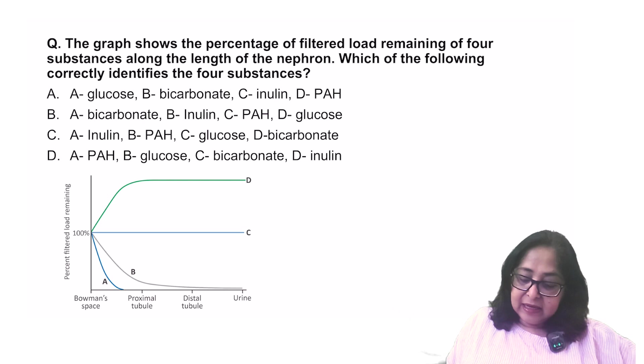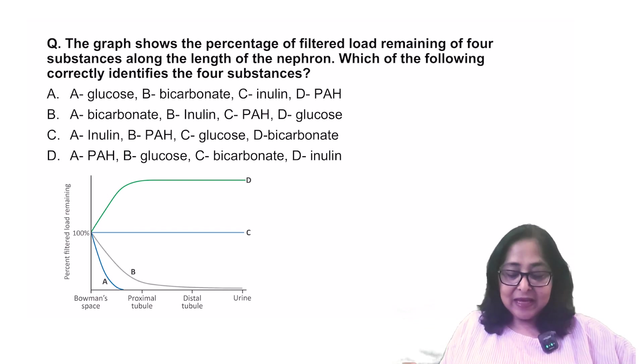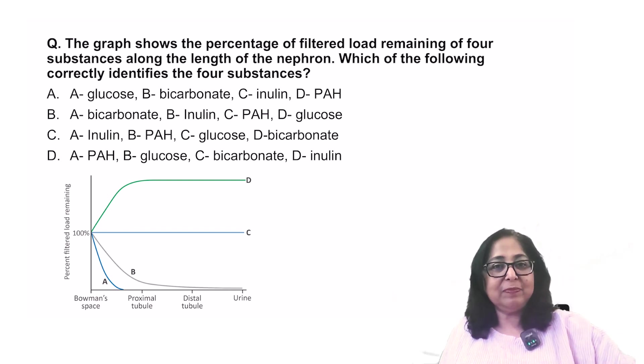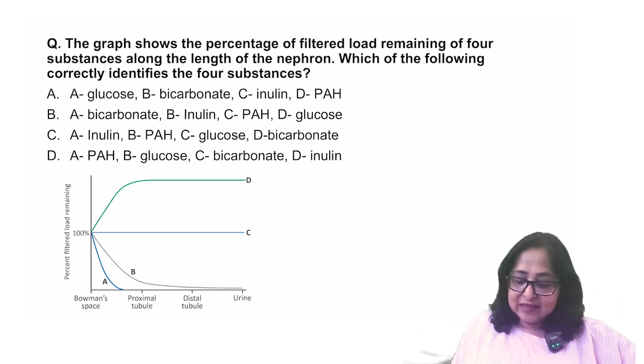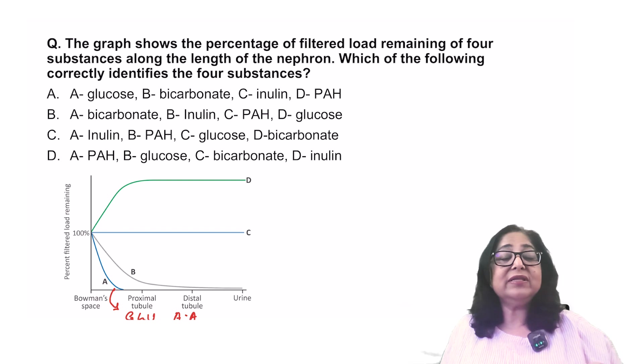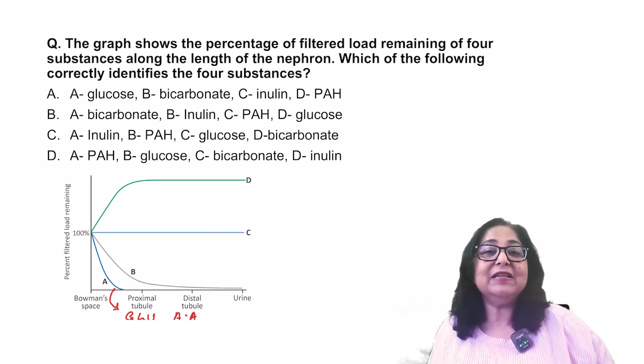Now, look at substance A. It is freely filtered. That means in the glomerular filtrate 100%. But then by the time it reaches the end of the PCT, zero remains in the tubular fluid. All of it is reabsorbed. So this is probably glucose and amino acids. Because glucose and amino acids are absorbed to the extent of 100% in the PCT itself.